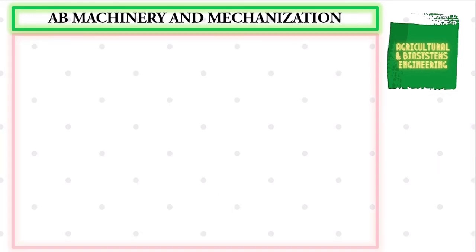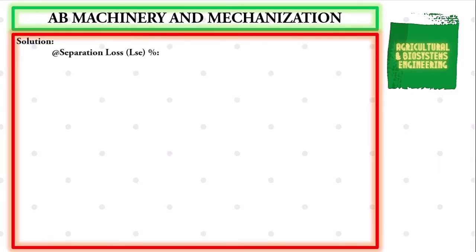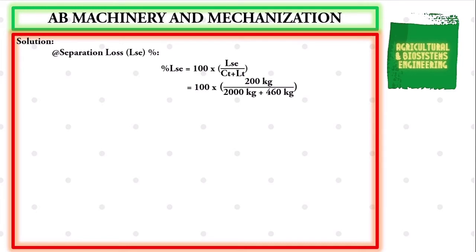The next value is the separation loss in percentage. The formula is: 100 multiplied by the quotient of separation loss in kilograms over the sum of the clean threshed grain added to the total loss, both in kilograms. Substituting: 100 × 200 kg / (2000 kg + 460 kg), giving a final value of 8.1301%.